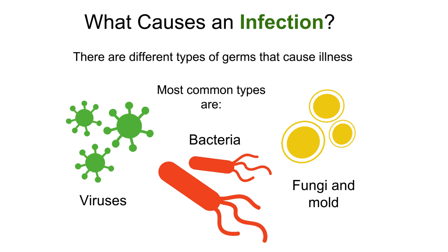Viruses are so small they cannot be seen with a regular microscope, and antibiotics don't work on infections caused by viruses. One example of a virus that we are all familiar with is influenza, also known as the flu. Bacteria come in different shapes and they can be seen with a microscope. Bacteria can be killed with antibiotics, but it can be difficult to find the correct antibiotic. An example of one type of bacteria is Clostridium difficile, or C. diff. C. diff infections may cause the patient to have stomach pain and diarrhea. A fungus usually attacks weak patients, or the really young, or the really old. There are no antibiotics to help with fungal infections.